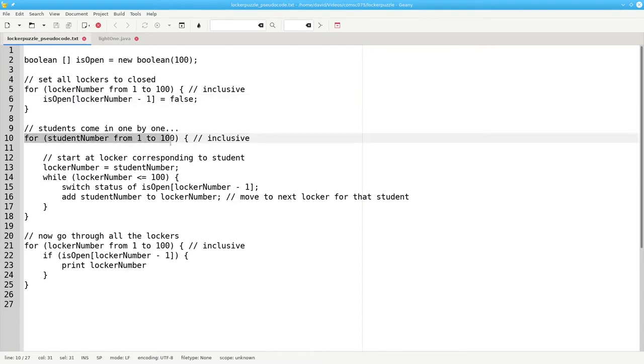Then we'll have our student numbers go from 1 to 100 inclusive. Start at the locker number corresponding to that student. And in this case, I'm using a while loop rather than a for loop to examine the lockers for that student. You can do it with a for loop, but the pseudocode is a bit clearer when I use a while. Once all the students have done their thing, I can go through all the lockers and see if they're open. And if they are, I'll print the locker number. There's the pseudocode.